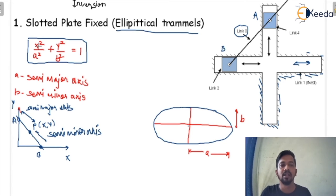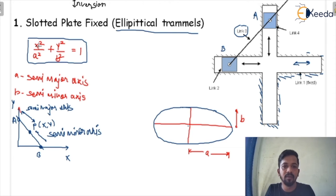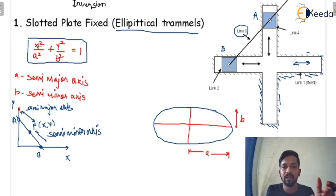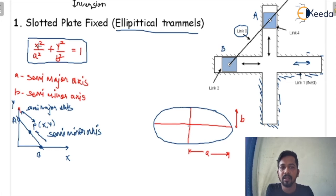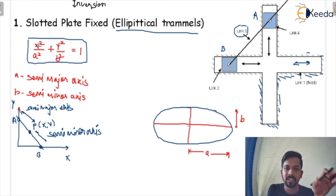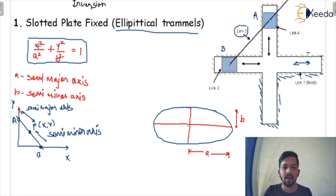This is the first inversion of the double slider crank mechanism. From the exam point of view, if there is a theoretical question, they will ask you: when you fix the slotted plate, what inversion or mechanism will you get? You just have to select elliptical trammel. They may also ask what the inversions of the double slider crank mechanism are — the options will include elliptical trammel, scotch yoke, quick return mechanisms, and Oldham's coupling. Remember: double slider crank mechanism gives elliptical trammel as one inversion.